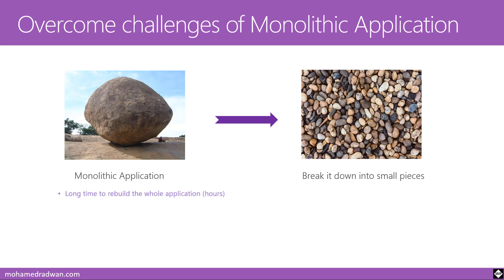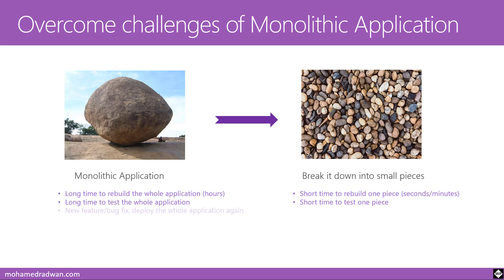With a monolithic application, it needs a long time to rebuild the whole application — it may take hours. With microservices, it's a short time to rebuild one piece — it could be seconds or a few minutes. For testing, a monolithic app requires a full integration test for any new feature or bug fix, which takes a long time. With microservices, we only test the one piece that has the new feature or bug fix.